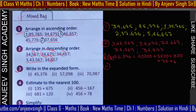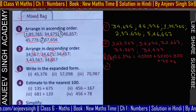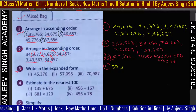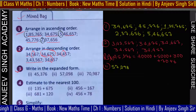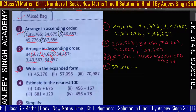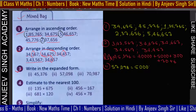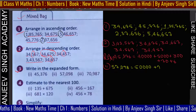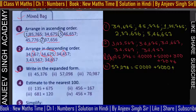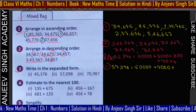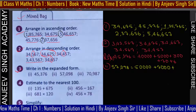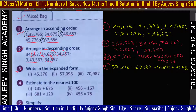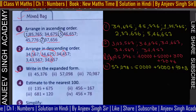दूसरा question है 57,098। इसको expanded form में लिखोगे तो: 50,000 plus 7,000 — उसके बाद 100 पर कुछ नहीं तो 100 को blank छोड़ दो — plus 90 plus 8। यह हो गया।